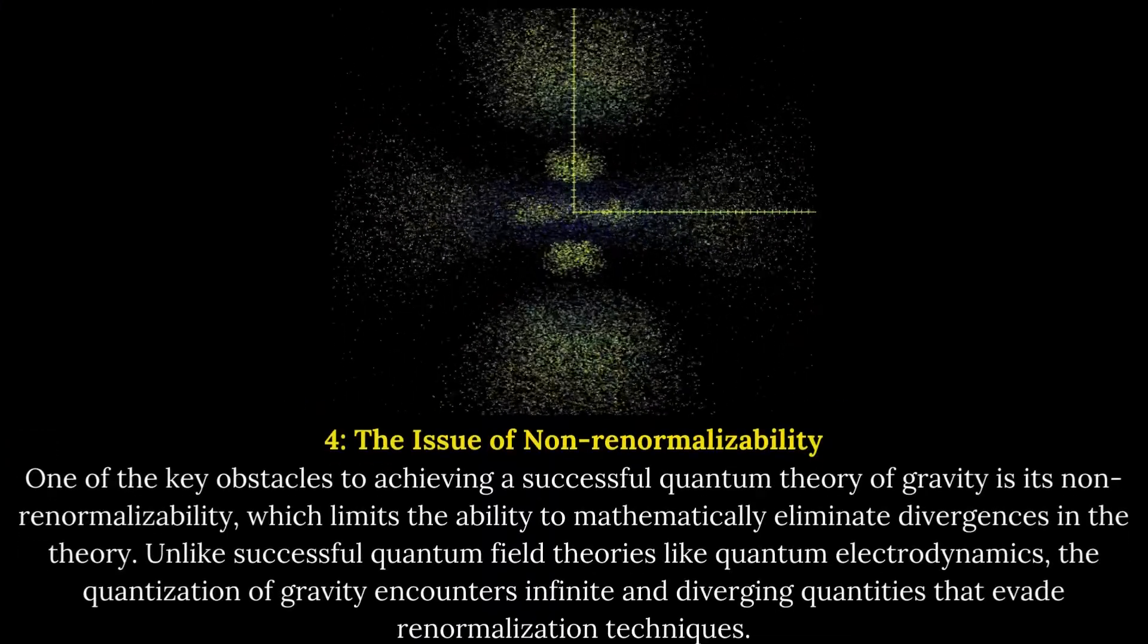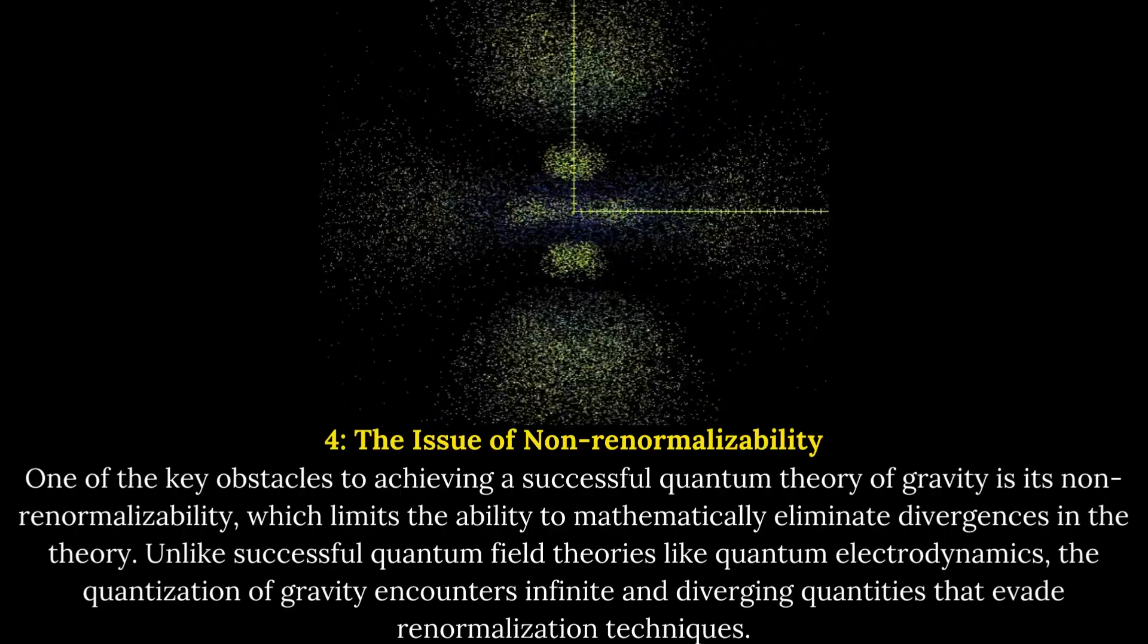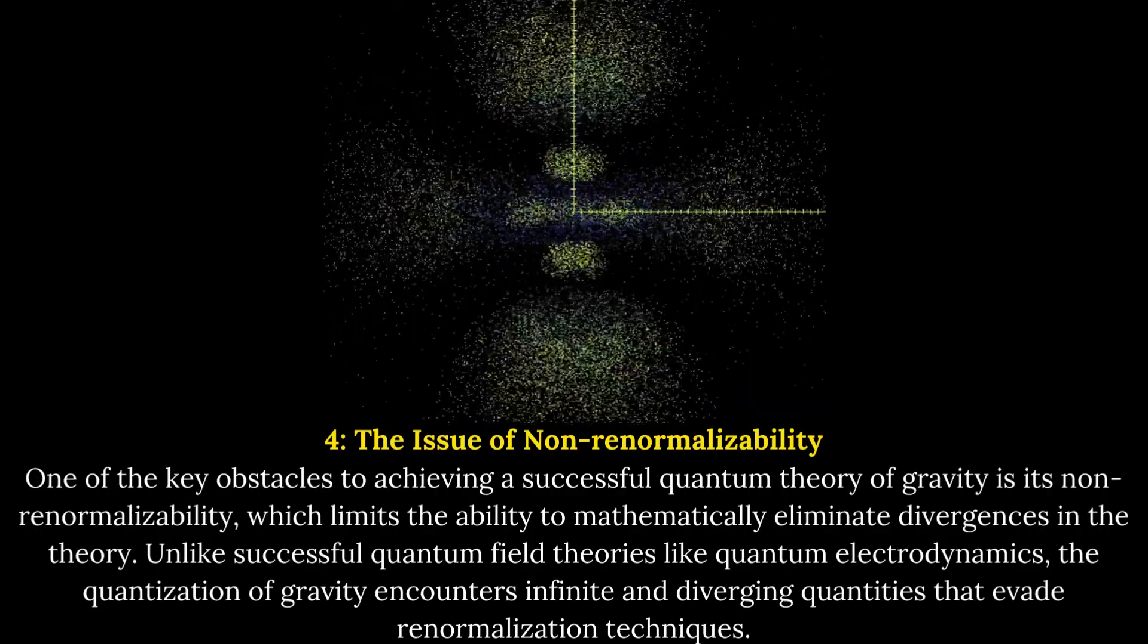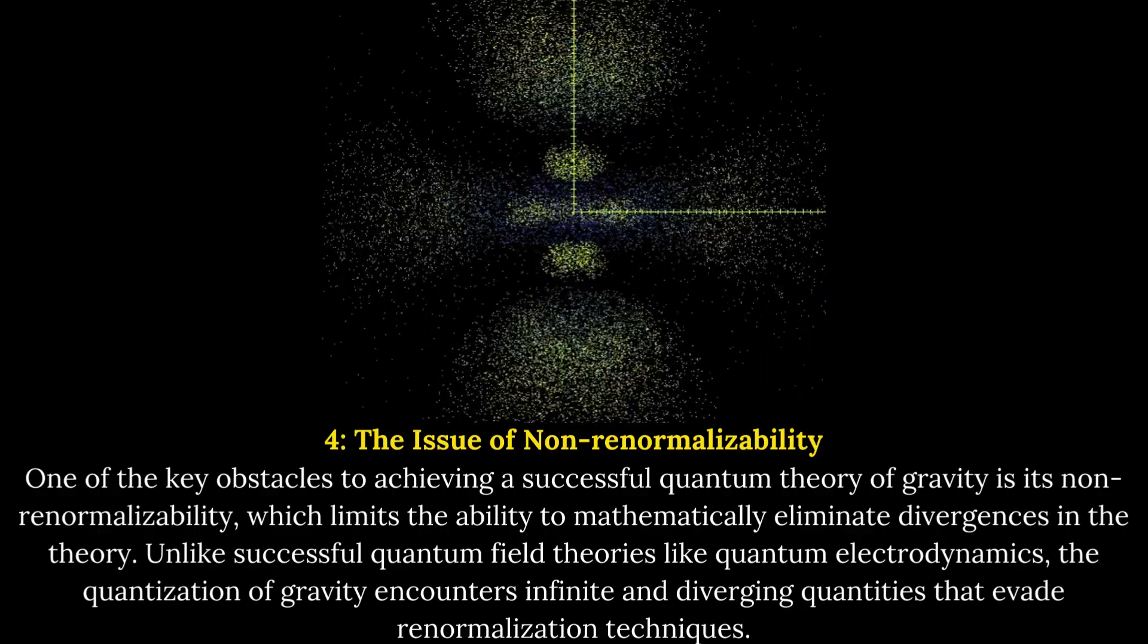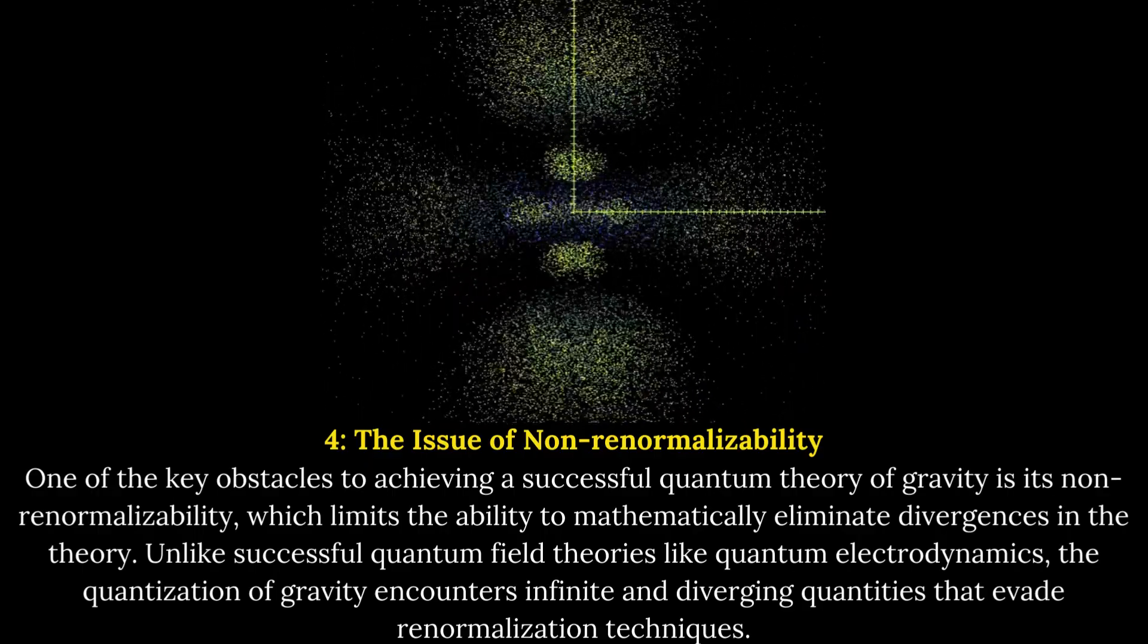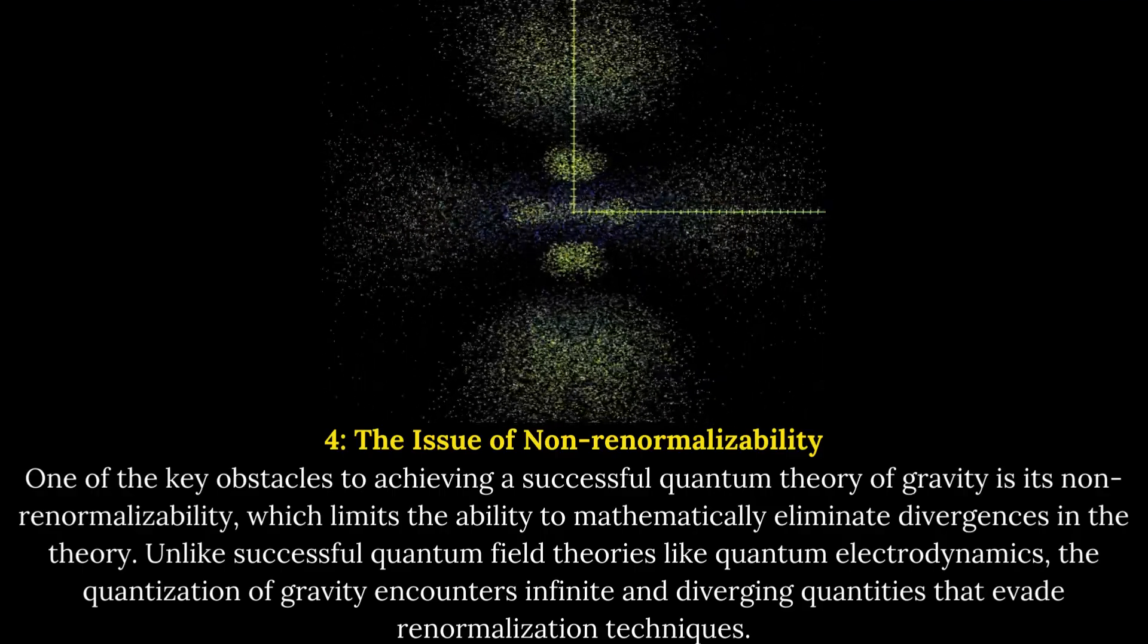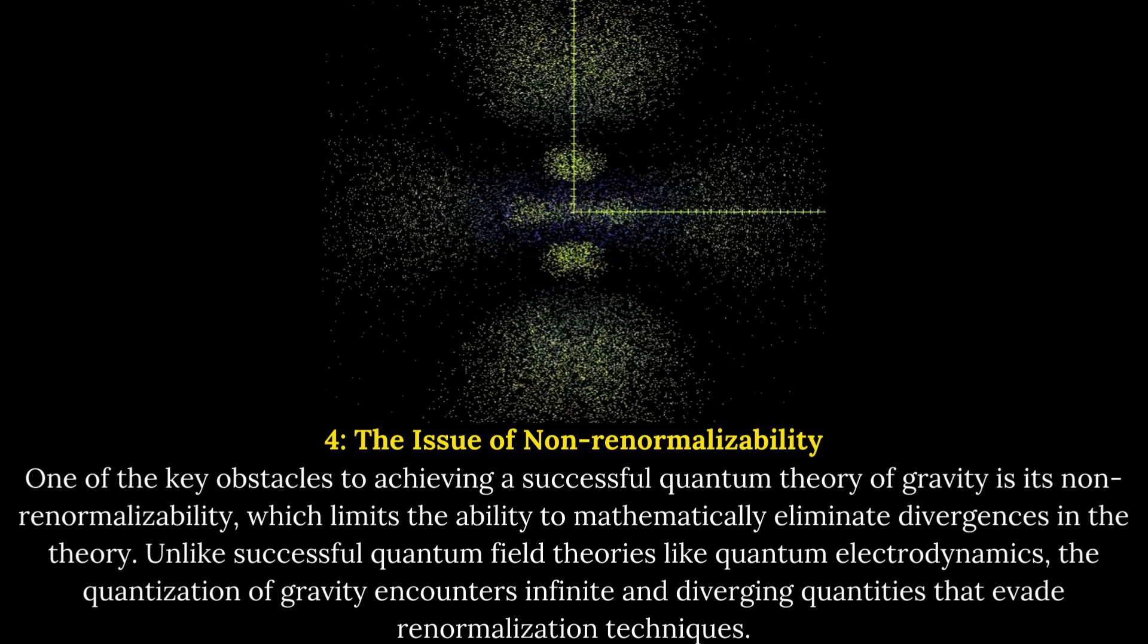The issue of non-renormalizability. One of the key obstacles to achieving a successful quantum theory of gravity is its non-renormalizability, which limits the ability to mathematically eliminate divergences in the theory. Unlike successful quantum field theories like quantum electrodynamics, the quantization of gravity encounters infinite and diverging quantities that evade renormalization techniques.